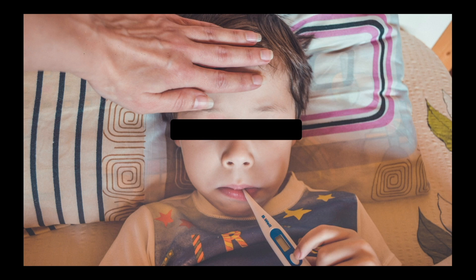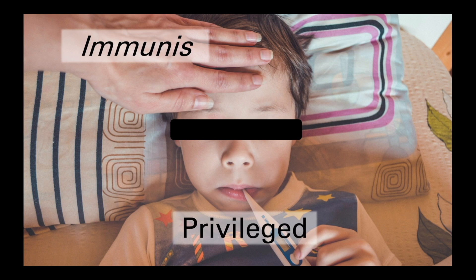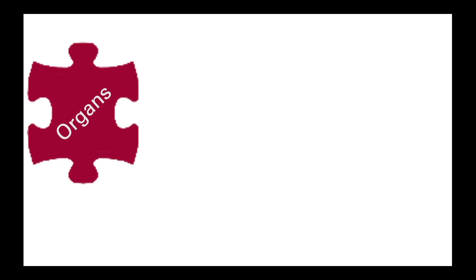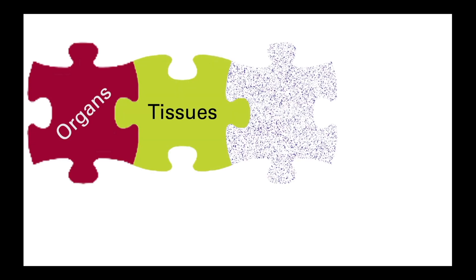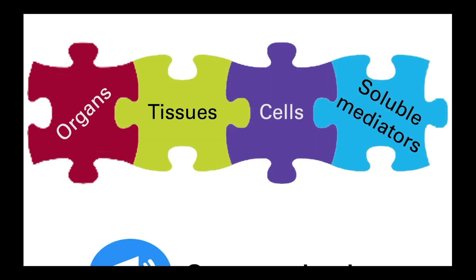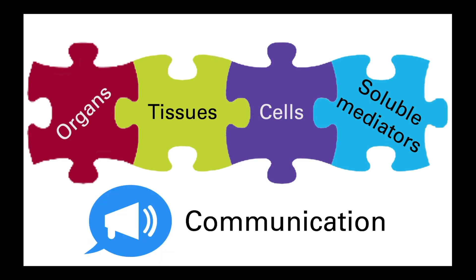Indeed, immunity derives its name from the Latin immunus, meaning privileged. As you'll see as we go through this course, the immune system is an astonishingly complex interplay between organs, tissues, cells and soluble proteins, and it's important that you take the time to understand how the different components fit together and communicate with one another. In this first video we're going to look at the different layers of the immune system and introduce some of the key players that we will then explore in more detail as we progress through the course.